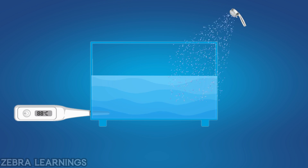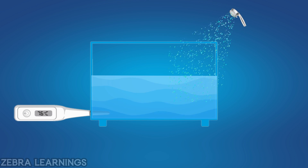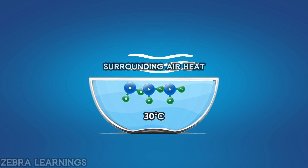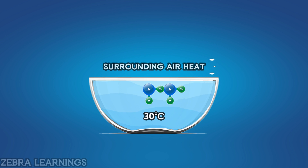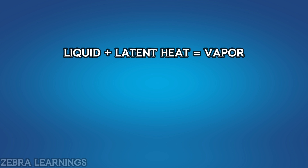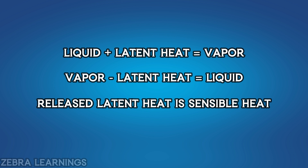Water doesn't evaporate only when it reaches 100 degrees Celsius — water can evaporate at any temperature. For example, we can take water in a bowl at 30 degrees Celsius. The molecules on the top surface of this water will use the surrounding heat as latent heat and evaporate, but this process is very slow. So, latent heat is added to a liquid to make it evaporate into vapor. When latent heat is removed from a vapor, it condenses back into a liquid. When latent heat is released from a vapor, it becomes sensible heat.